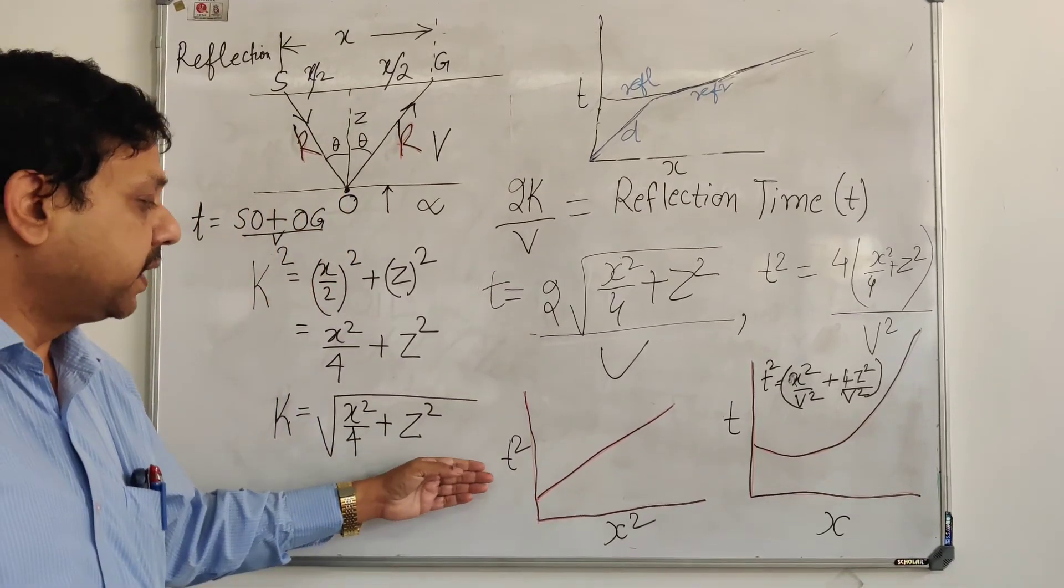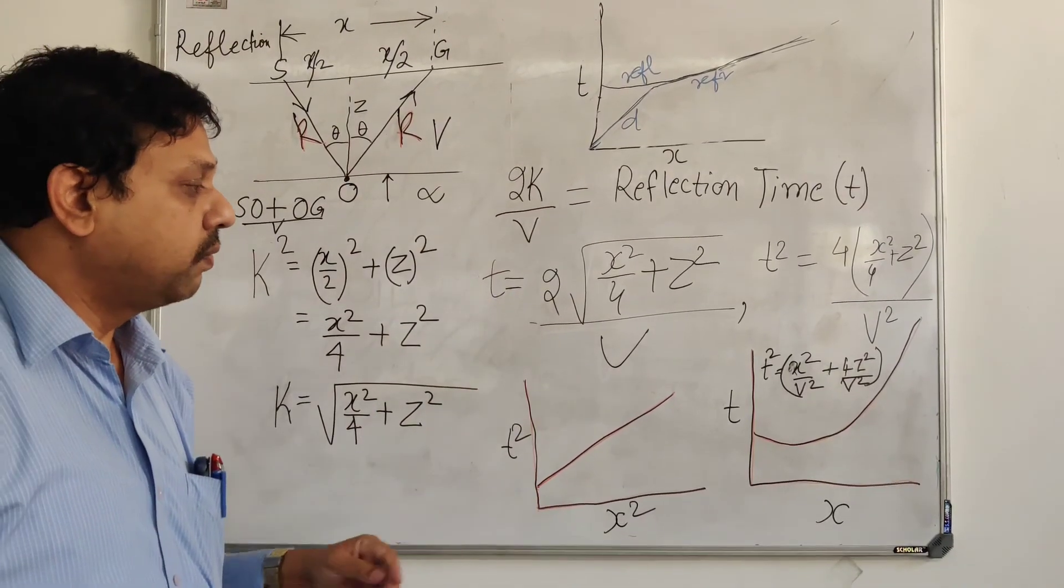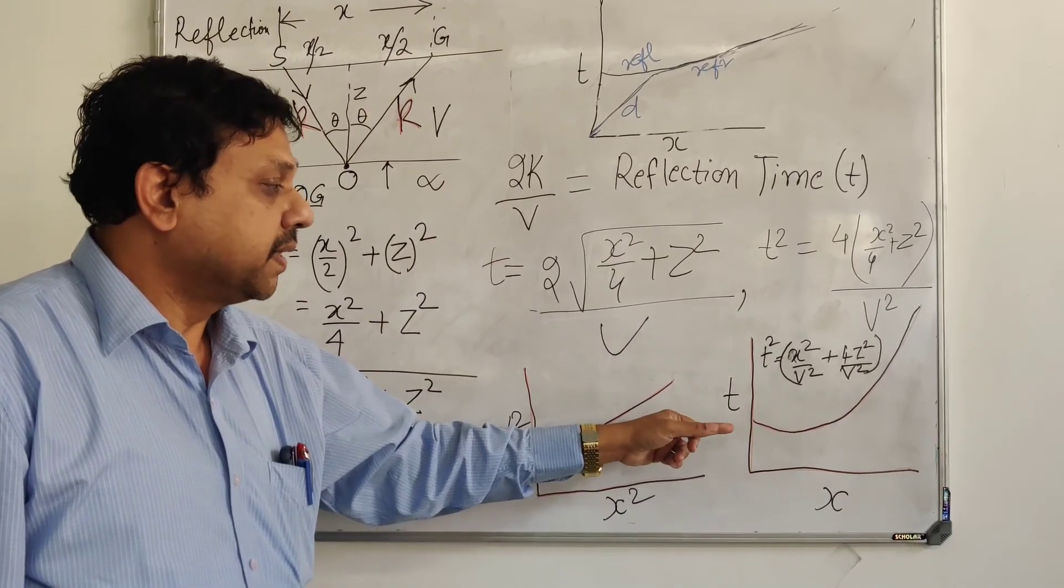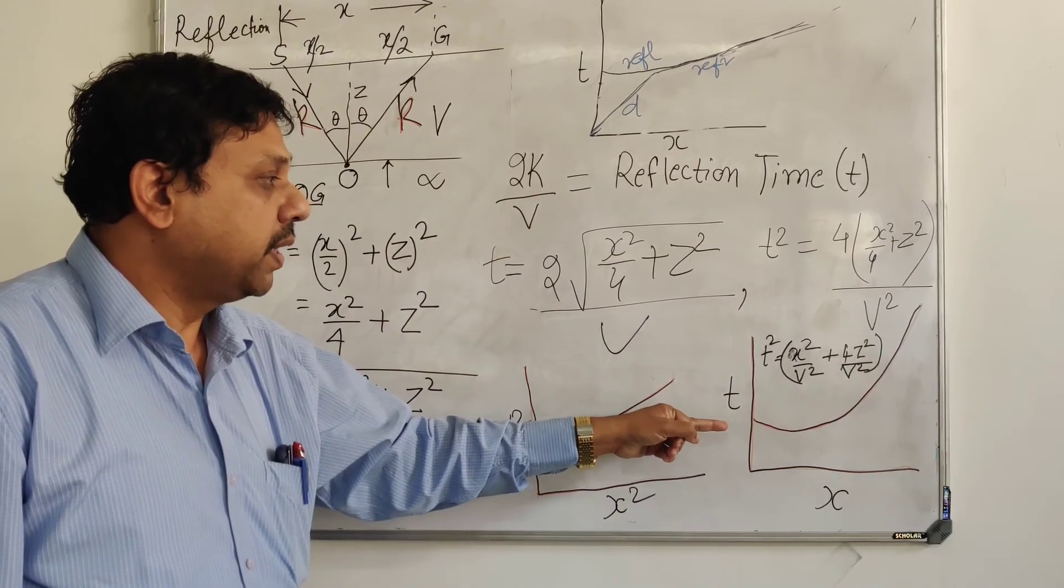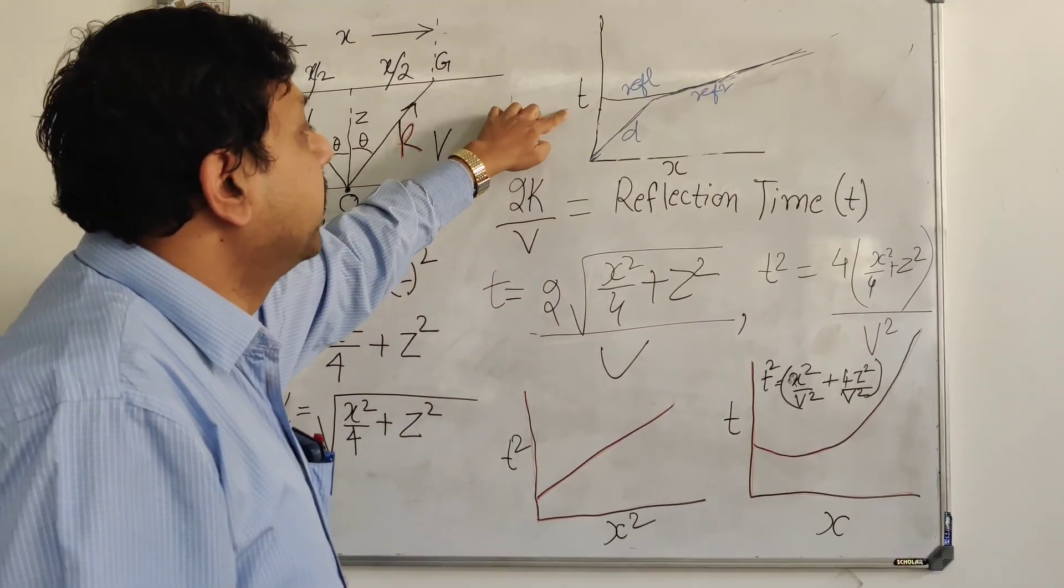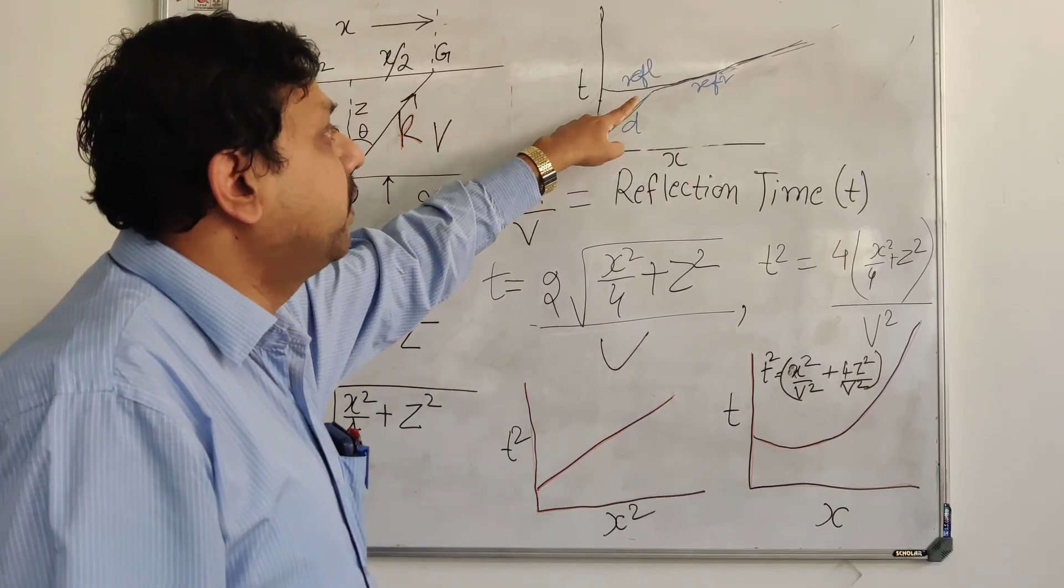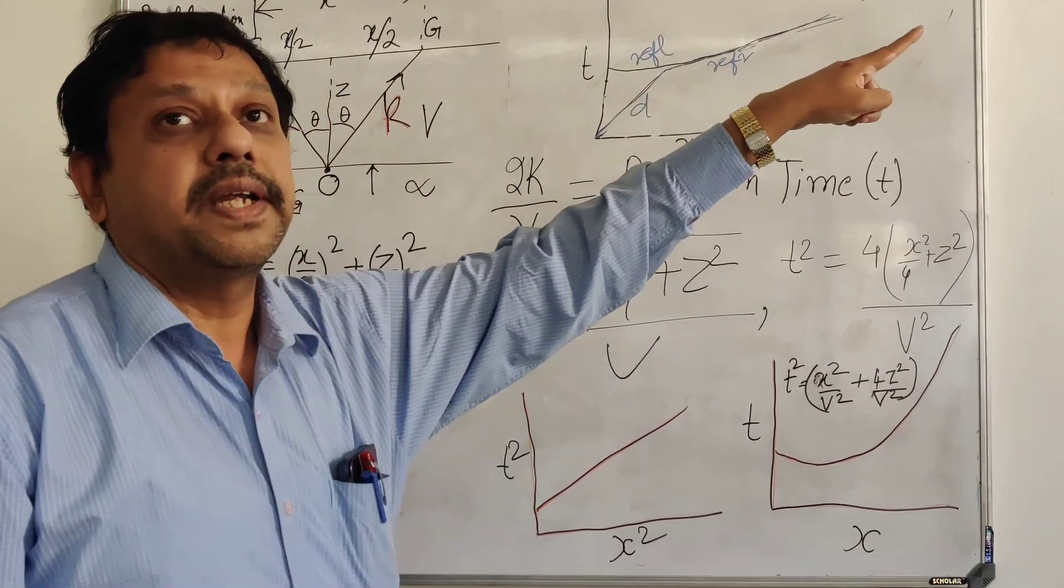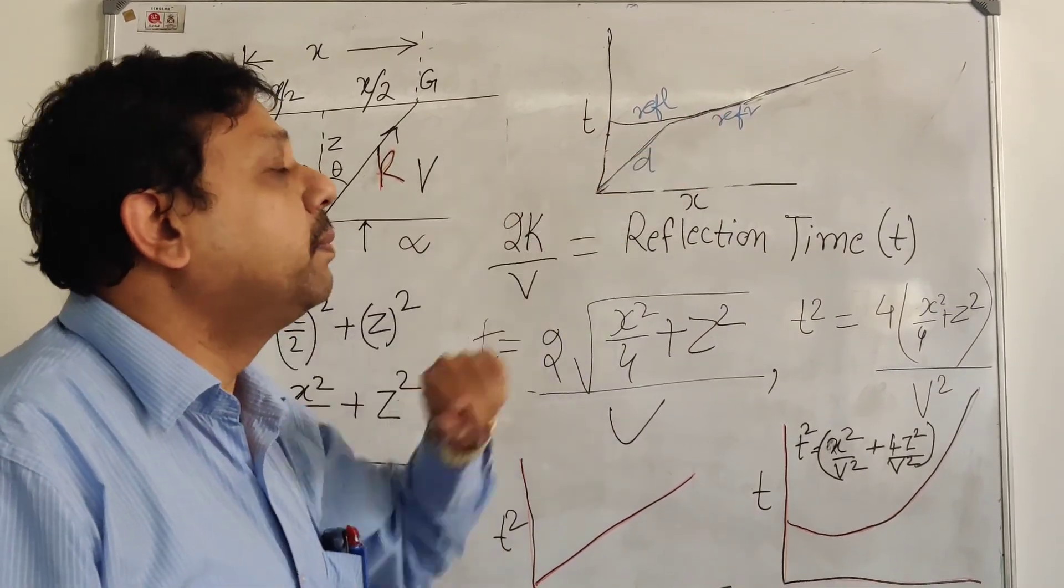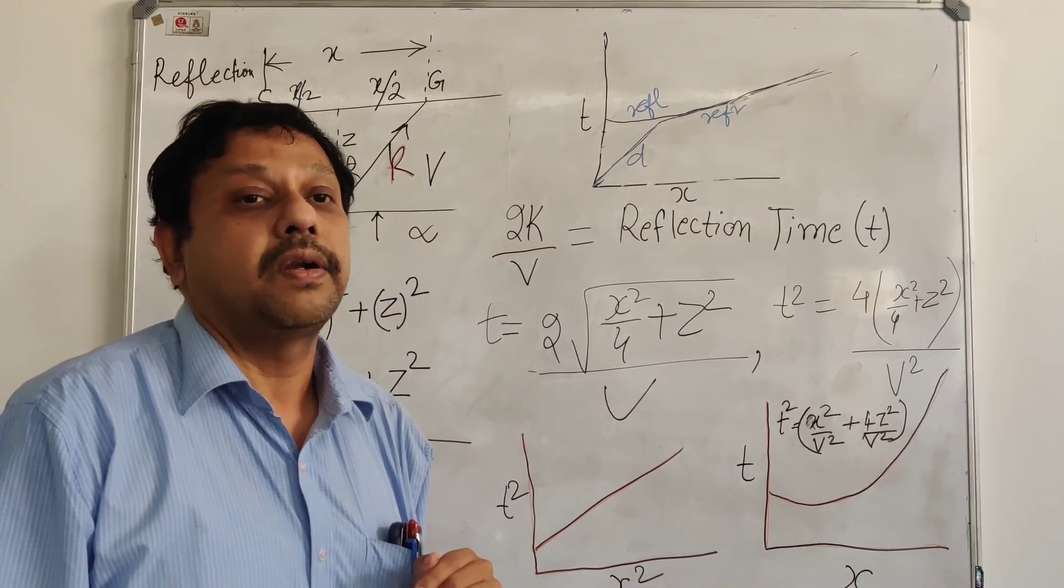Now if you plot between T square and X square, you will get a straight line, whereas T by X, you can see that we are actually going to draw a parabola. So when you make an equation TX, we have first the direct wave, then the refracted wave, and the reflection will be asymptotic to the refraction at a higher offset value.